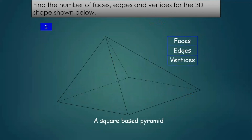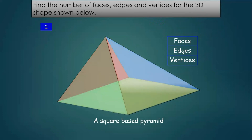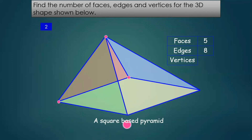For a square-based pyramid: faces are five (four plus one), edges are eight (two times four), and vertices are five (four plus one). For vertices, just add one to the number of sides of the base. For faces, also add one to the number of sides of the base. For edges, multiply the number of sides by two.